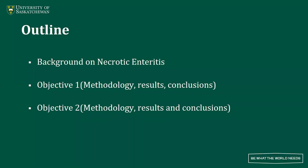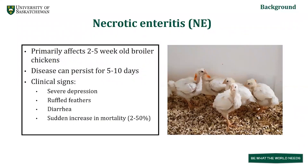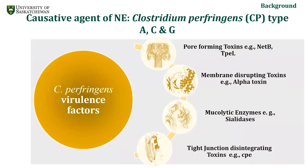Necrotic enteritis primarily affects broiler chickens between two to five weeks of age. Once established, it persists in the flock for five to ten days. Clinically, birds show severe depression with ruffled feathers and often brown foamy diarrhea, with a sudden increase in mortality which can go up to fifty percent. Necrotic enteritis is caused by Clostridium perfringens type A, C, and G.